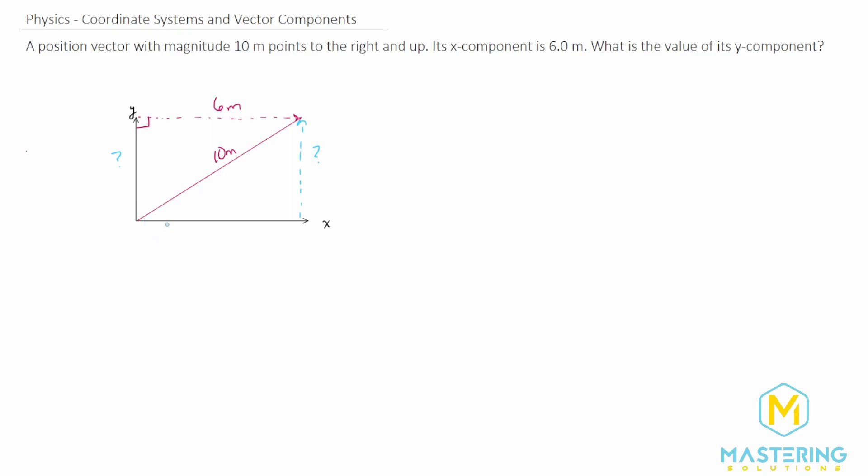So since we have a right triangle, we can use Pythagorean theorem of course to solve for this. So Pythagorean theorem states that a squared plus b squared is equal to c squared.